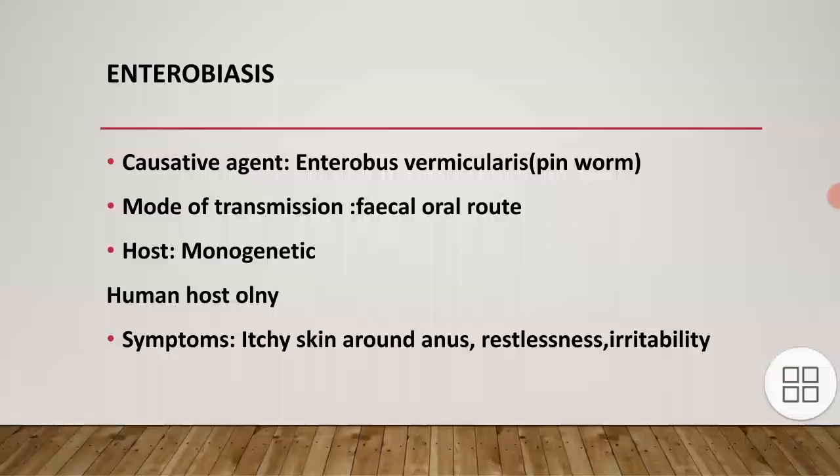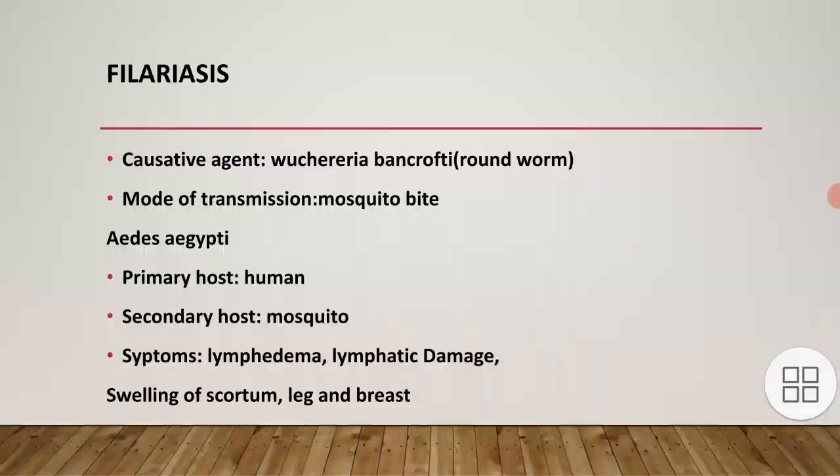Filariasis: the causative agent is Wuchereria bancrofti, or roundworm. Mode of transmission is mosquito bite — this is different from the others. If a mosquito of the genus Aedes aegypti bites, it transmits filariasis. Primary host is human; secondary host is mosquito. Symptoms include lymphedema, lymphatic damage, and swelling of the scrotum, leg, and breast.